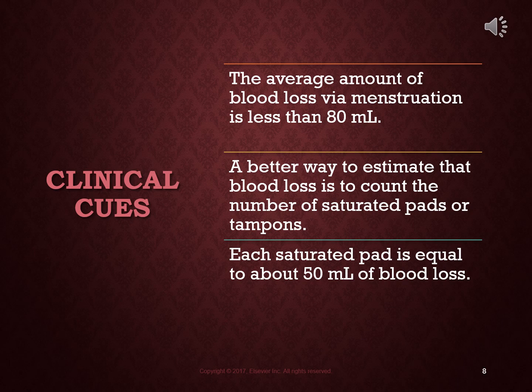In practice, if you are taking care of women of childbearing age, keep in mind that they are at particular risk for anemia. The average amount of blood loss via menstruation is less than 80 mL, though some people lose considerably more because of fibroids and other problems. A better way to estimate blood loss, both with menstruation and in a postpartum situation, is to count the number of saturated pads or tampons — each saturated pad equals about 50 mL of blood loss.